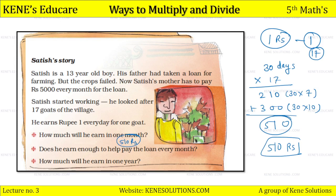Does he earn enough to help pay the loan every month? Satish's mother had to pay 5000 every month for the loan, but Satish's earning of 510 rupees will not help pay the loan every month. So now let's find out how much he will earn in one year.